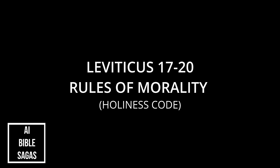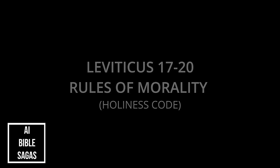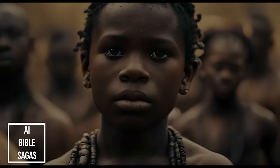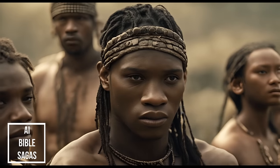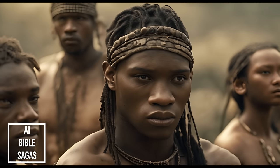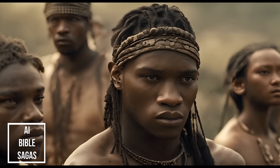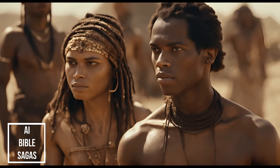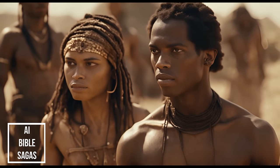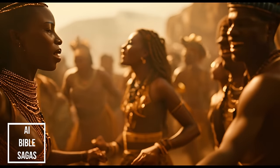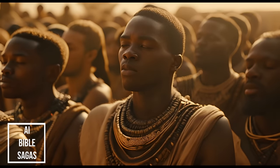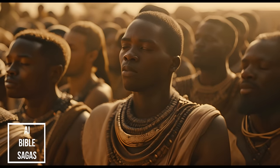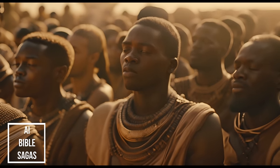Chapters 17 through 20, often referred to as the Holiness Code, outline the standards for moral and ethical conduct among the Israelites. These chapters cover a wide range of topics, including the prohibition of consuming blood, regulations against idolatry, sexual morality, and social justice. The Holiness Code emphasizes that the Israelites are to be holy because God is holy, and their conduct should reflect their covenant relationship with Him.